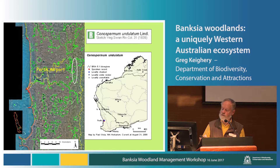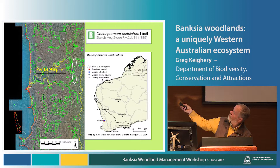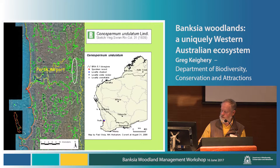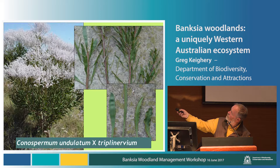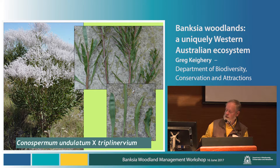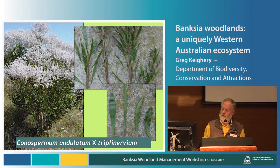Banksia woodlands do have some very rare species. One of them is Conospermum undulatum — that's its total known distribution. Not only is it incredibly rare, but on the west side where it meets Conospermum triplinervum, there are a whole series of hybrids. Maintaining the ecological processes of these very rare species in Banksia woodlands is going to be tricky. There is currently a PhD running on Conospermum undulatum.